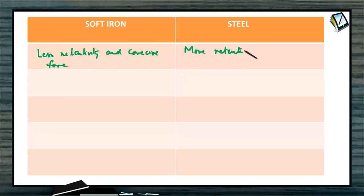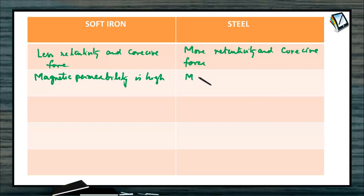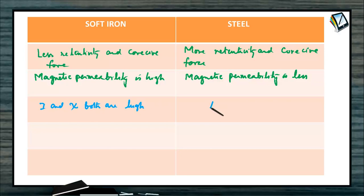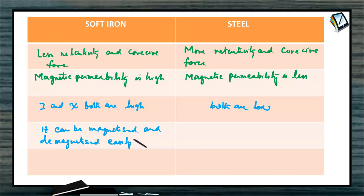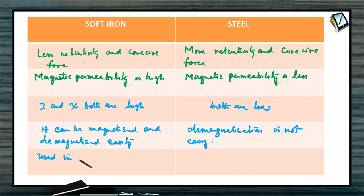Steel is used for making permanent magnets. To summarize: soft iron has less retentivity and coercive force, while steel has more retentivity and coercive force. Magnetic permeability is high for soft iron and low for steel. I and xi are both high for soft iron and both low for steel. Soft iron can be magnetized and demagnetized easily, but steel demagnetization is not easy.